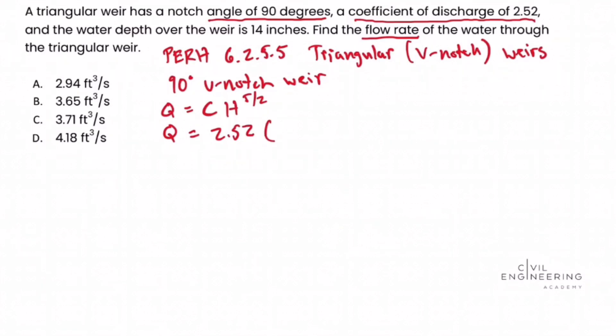So H, we said was the water depth over the weir, and so we're given in the problem statement that that is 14 inches. But we need to be careful because if we look in the PE reference handbook,